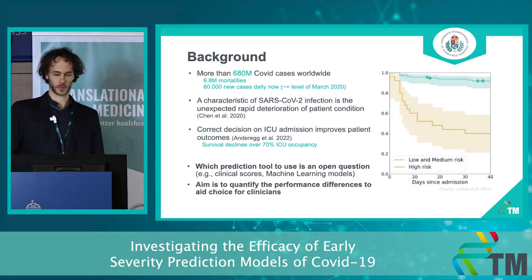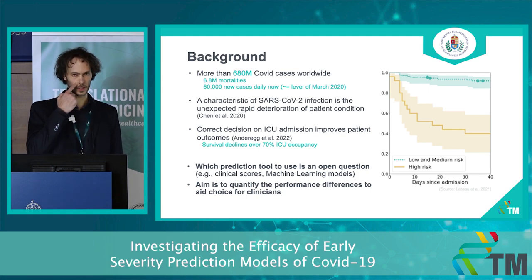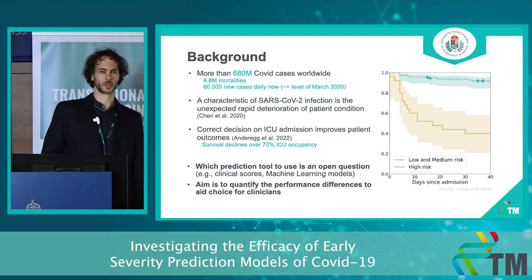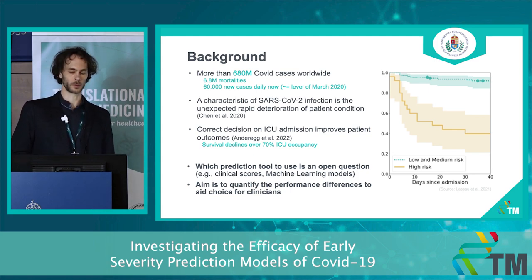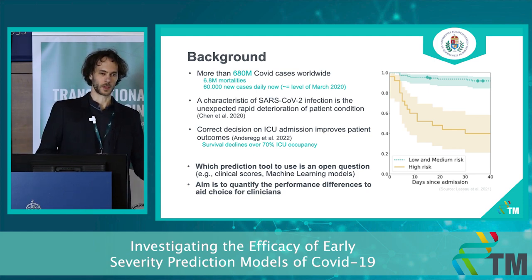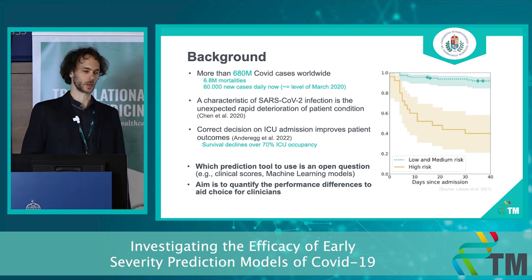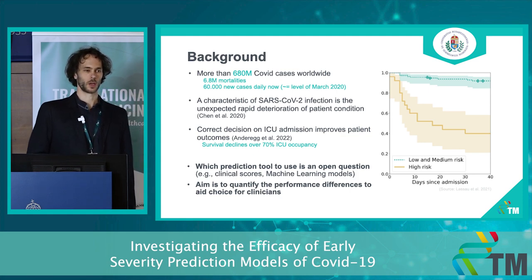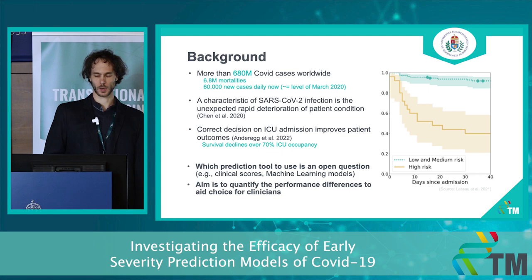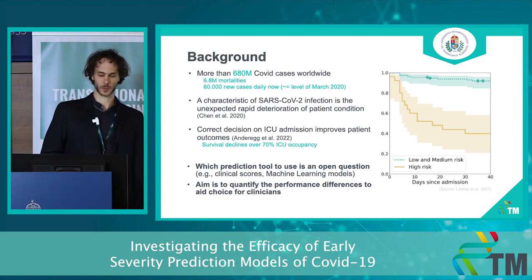The COVID pandemic has affected around 680 million people, with about 6.8 million mortalities, and currently there are still around 60,000 reported cases worldwide, which is on the level of March 2020. A characteristic of this disease is a rapid deterioration of patient condition, so we'd like to make correct decisions on possible severity as soon as possible. Even in developed countries such as Switzerland, high ICU occupancy worsens patient outcomes, so we would like to effectively allocate resources as much as we can.